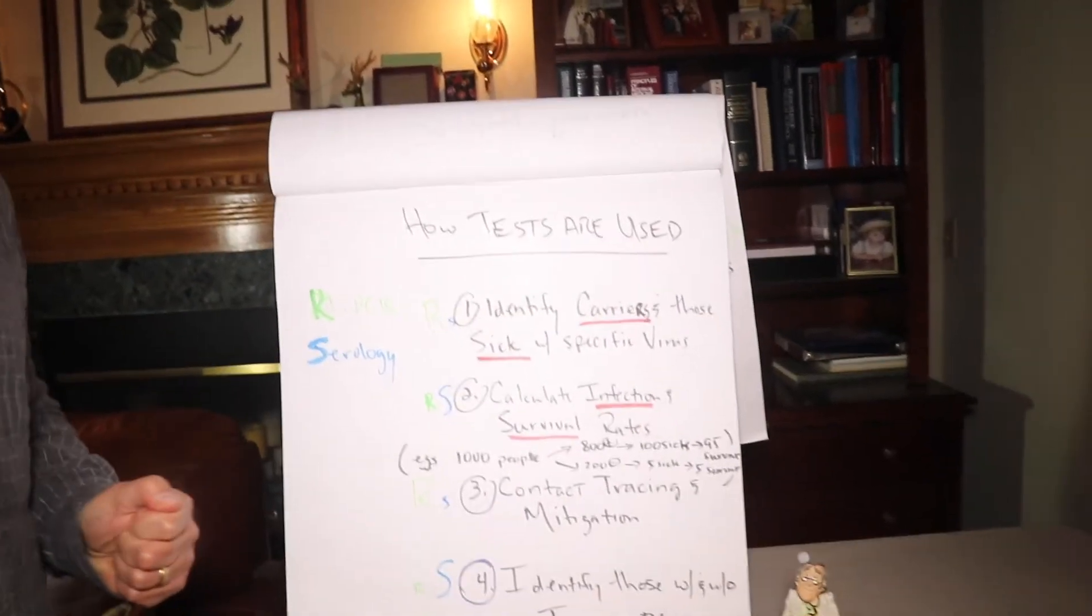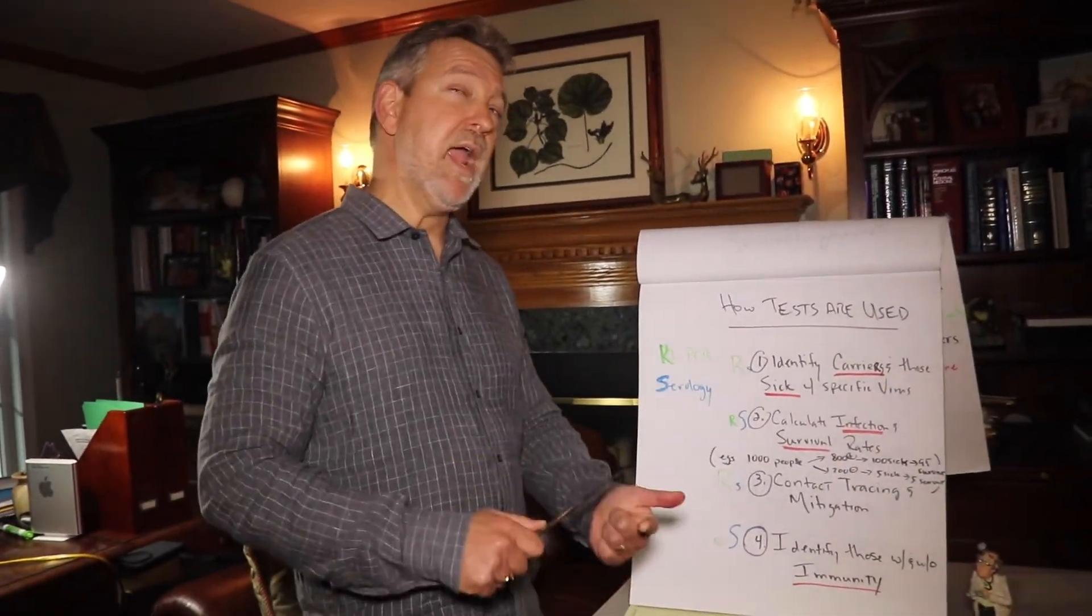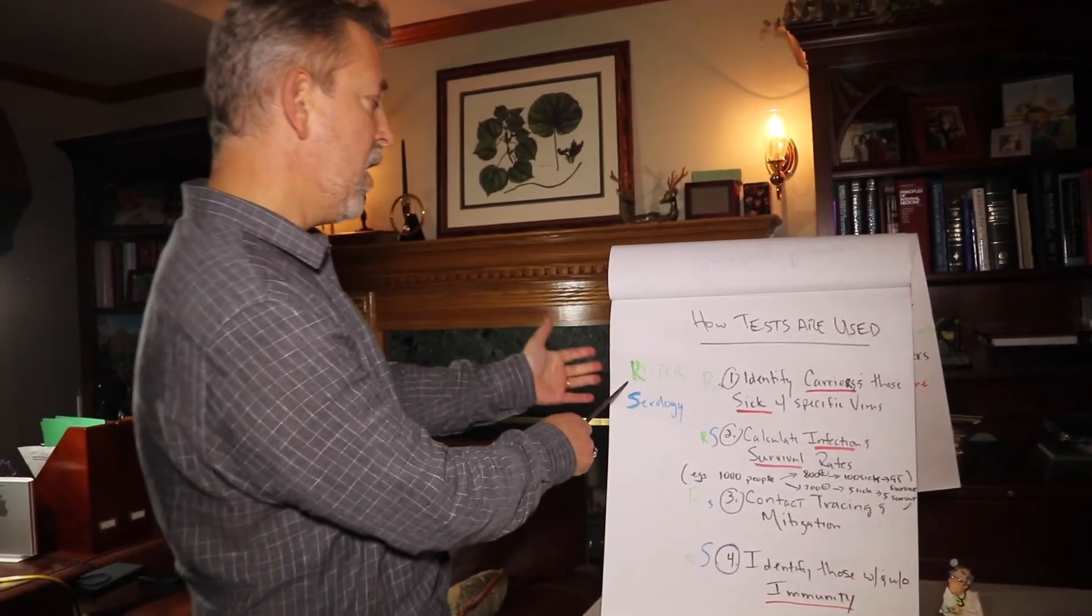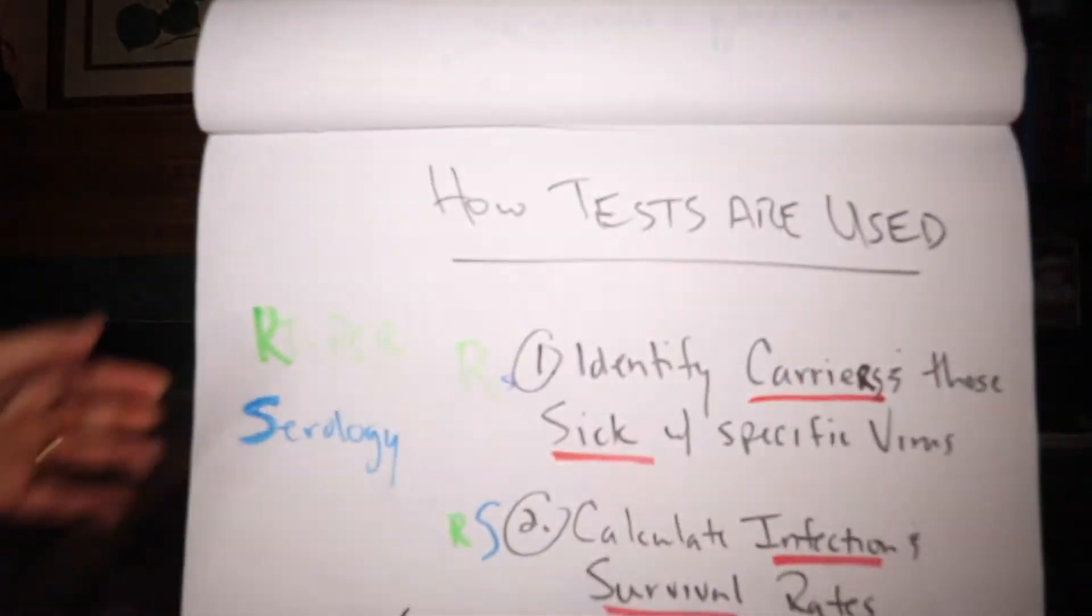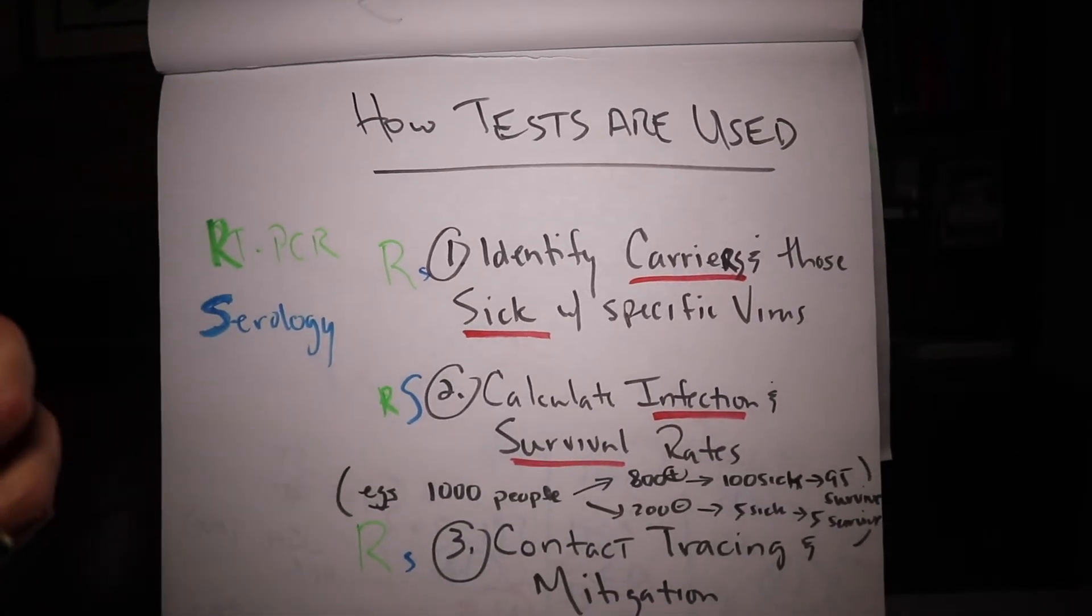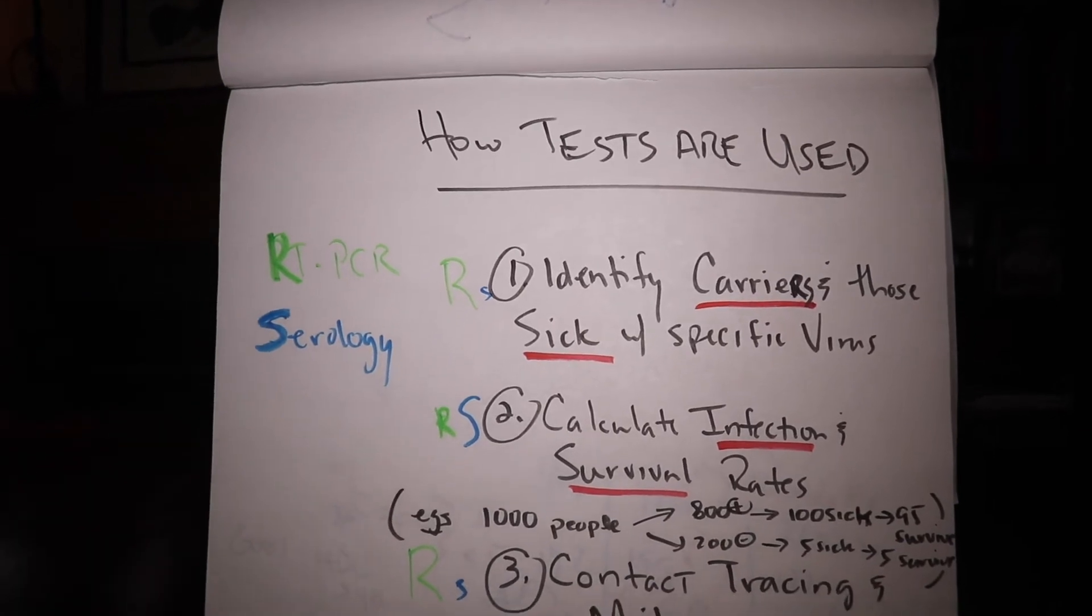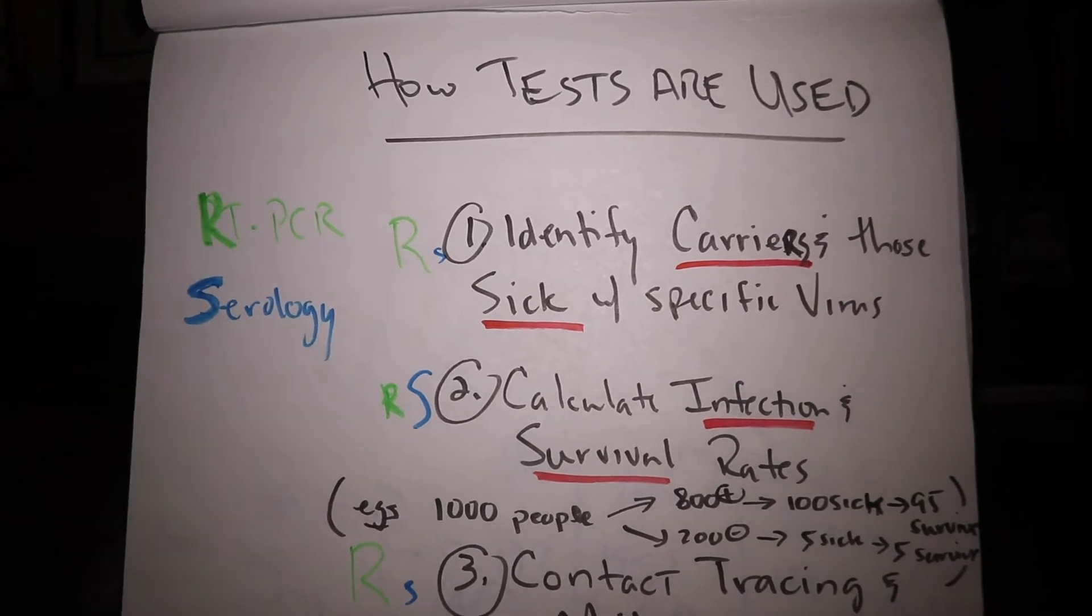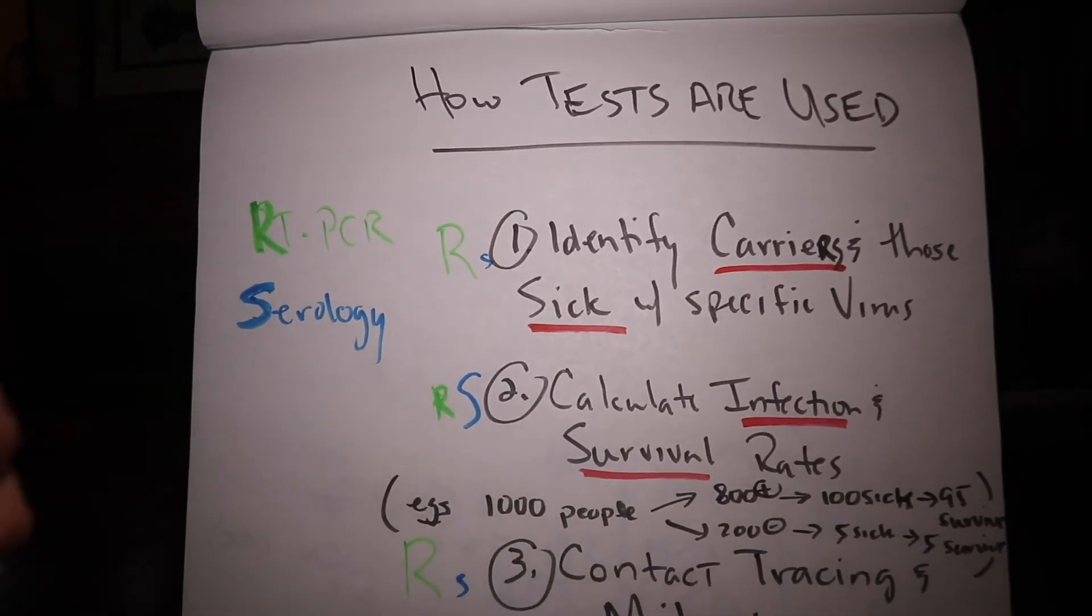So, now that we understand the two tests, the one that measures the virus particles using the DNA system, and the other one that uses our antibodies, how are they going to be used? So, I've made green the RT-PCR, the one in your nose, and blue for serologies. The first way we're going to use these tests is to identify those who are carrying the virus and those who are sick with this specific virus. That's best by measuring the virus itself, of course, the particles of the virus. So, the one in the swab, the RT-PCR is going to work best, not necessarily the one that measures the antibodies, because you may not have made those yet.